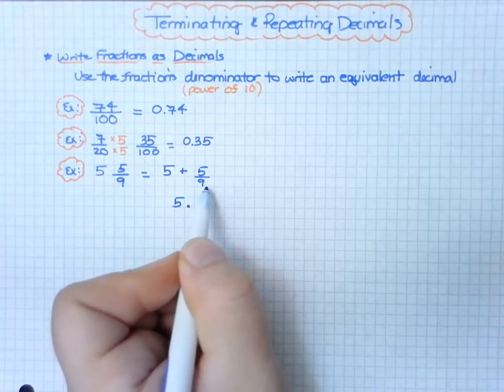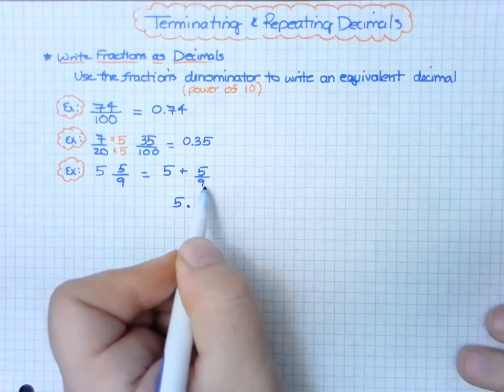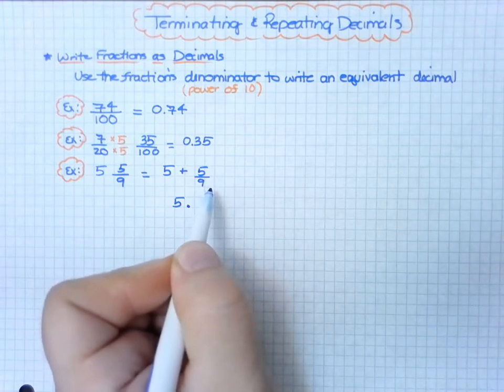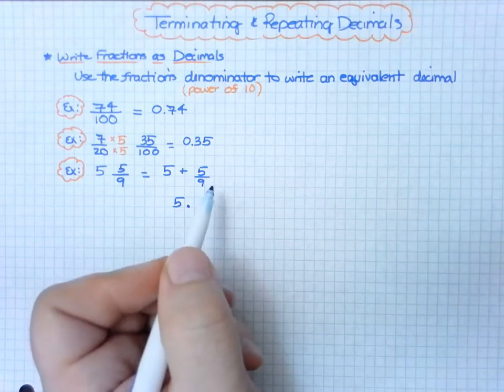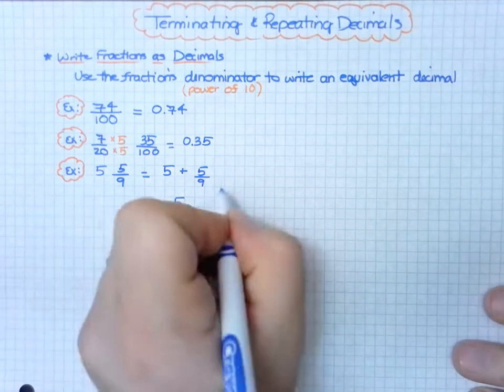But 9 times 1 is 9, 9 times 2 is 18, so that won't work. It doesn't work to go into 100 or 1000 either. If I'm not sure, I can just do old-school long division.